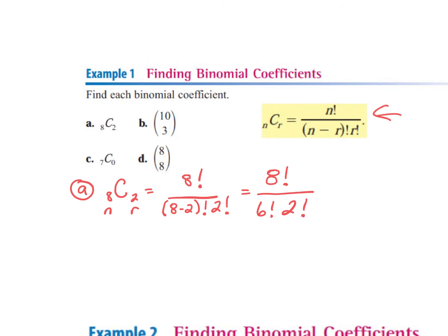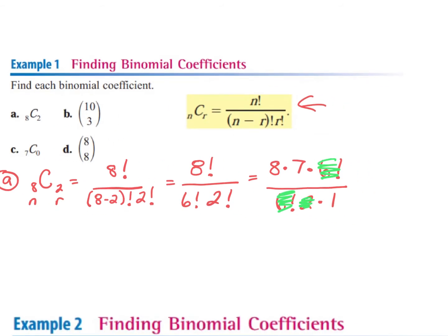Can I multiply the 6 and the 2 together and get 12? No. I'm going to write 8 times 7, and stop right there with 6 factorial on top. Why? Because I have a 6 factorial on the bottom. And I have 2 times 1. So now we simplify: 6 factorial on the bottom crosses off with the top. 2 goes into 2 once, 2 goes into 8 four times. 4 times 7 is 28. That's it — that's exactly how you do these problems.